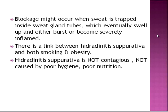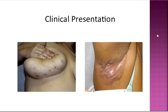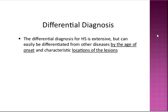There is a link between Hidradenitis Suppurativa and both smoking and obesity. Hidradenitis Suppurativa is not contagious, not caused by poor hygiene, and not caused by poor nutrition. This is the clinical presentation. The differential diagnosis of Hidradenitis Suppurativa is extensive, but can easily be differentiated from other diseases by the age of onset and characteristic location of the lesions.